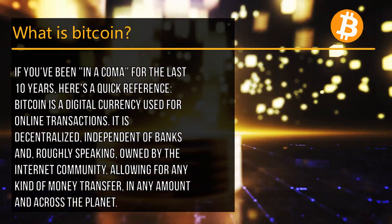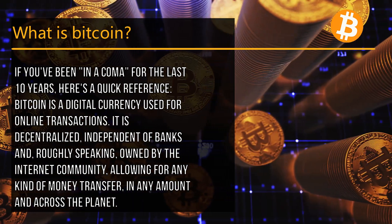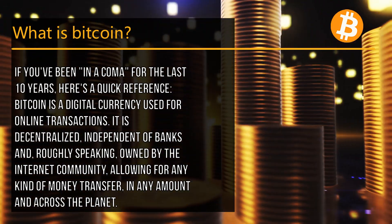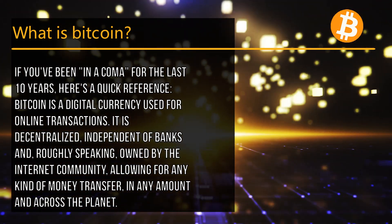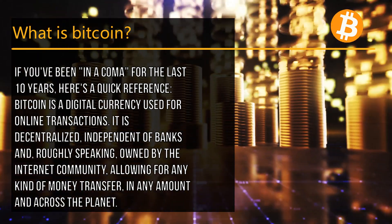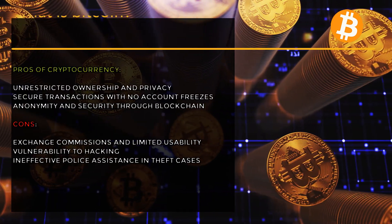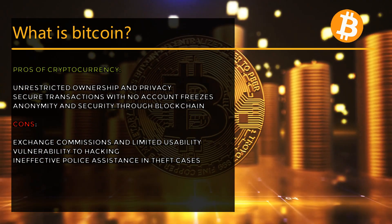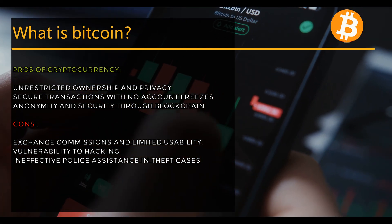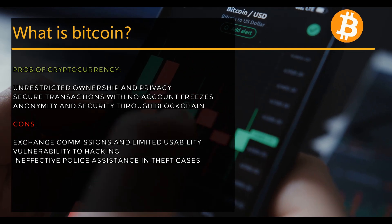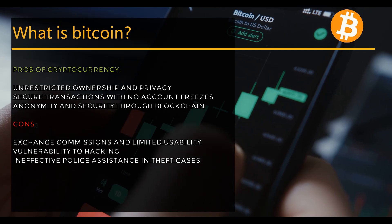If you've been in a coma for the last 10 years, here's a quick reference: Bitcoin is a digital currency used for online transactions. It is decentralized, independent of banks, and roughly speaking owned by the internet community, allowing for any kind of money transfer in any amount across the planet. Pros of cryptocurrency: unrestricted ownership and privacy, secure transactions with no account freezes, anonymity and security through blockchain. Cons: exchange commissions and limited usability, vulnerability to hacking, and ineffective police assistance in theft cases.